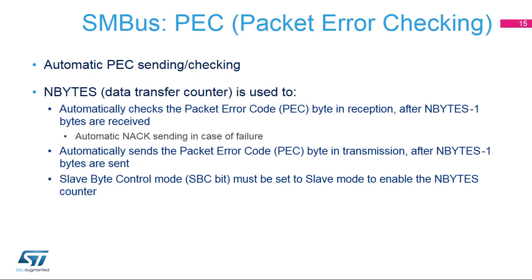The data transfer counter initialized with the Nbytes value is used to automatically check the PEC byte in reception after Nbytes minus one byte are received. If the received PEC byte does not match the calculation, a not acknowledge is automatically sent after the PEC byte. In transmission, the internally calculated PEC byte is automatically sent after Nbytes minus one byte. Slave byte control mode must be enabled in slave mode to enable the Nbytes counter and allow automatic PEC reception or transmission.